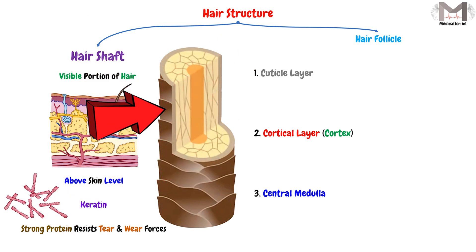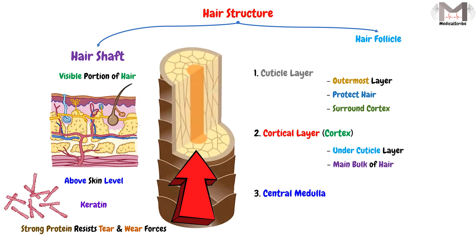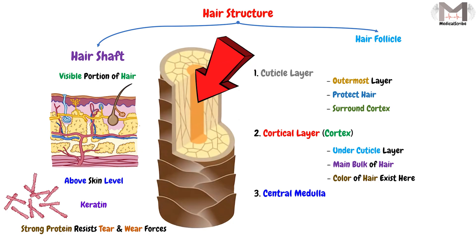The hair shaft consists of three layers: the cuticle layer, the cortical layer or cortex, and the central medulla. The cuticle is the outermost layer that protects the hair and surrounds the cortex. The cortex, found under the cuticle, represents the main bulk of the hair and contains the hair color pigment. The central medulla exists only in thick hair and is the innermost layer, containing transparent cells.